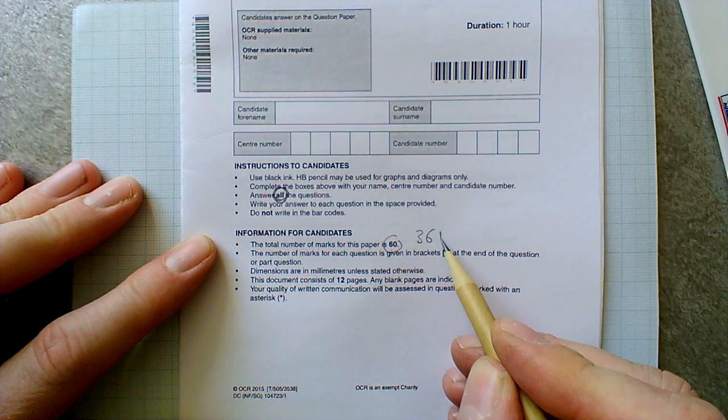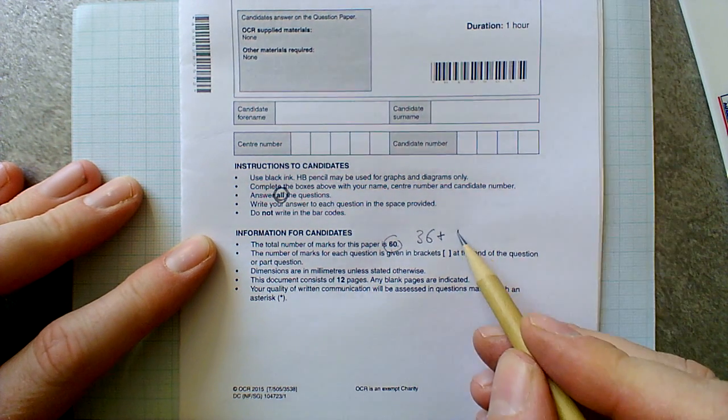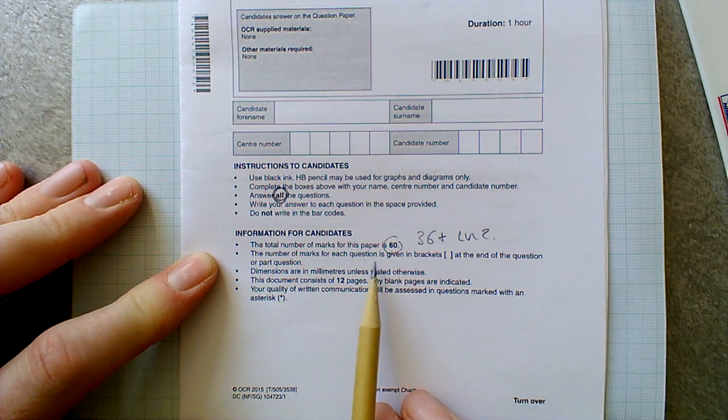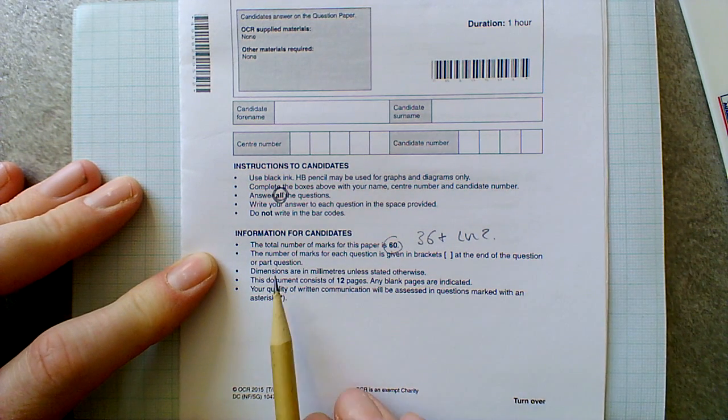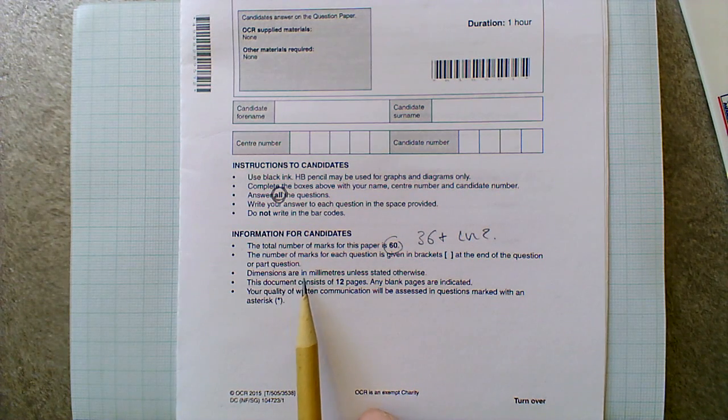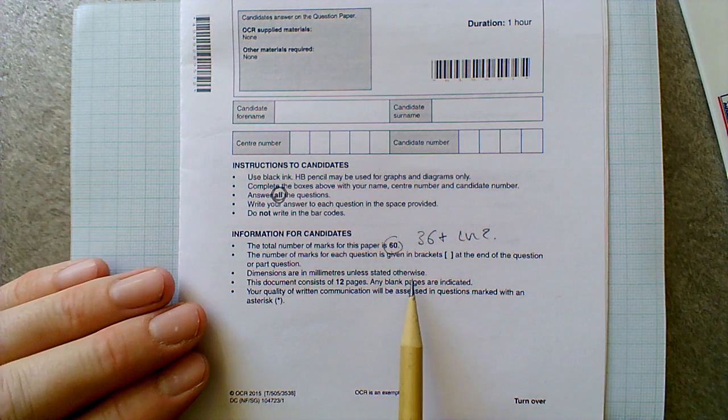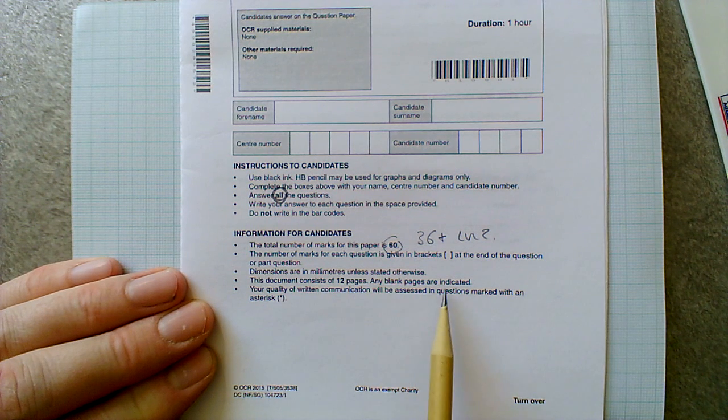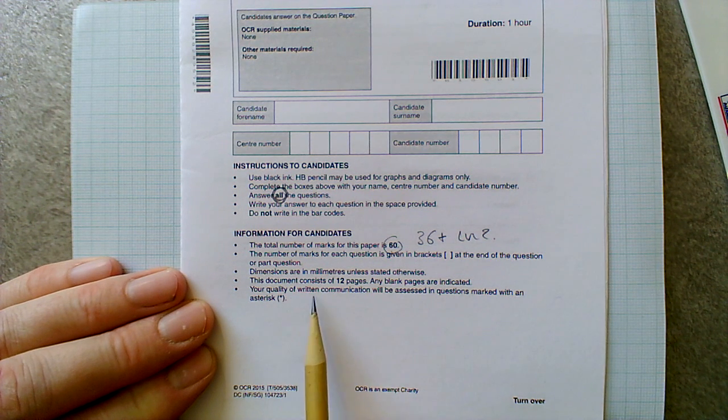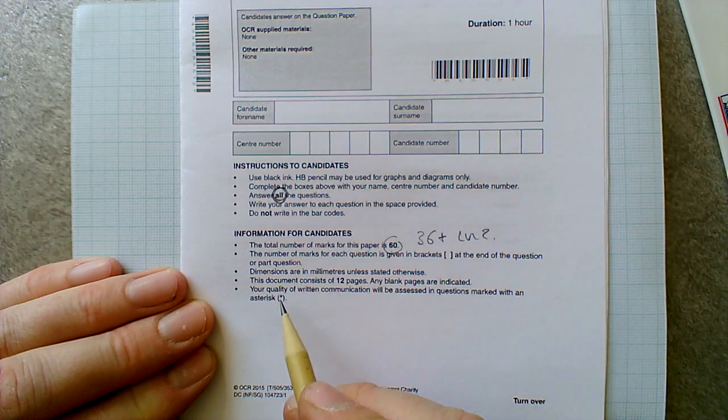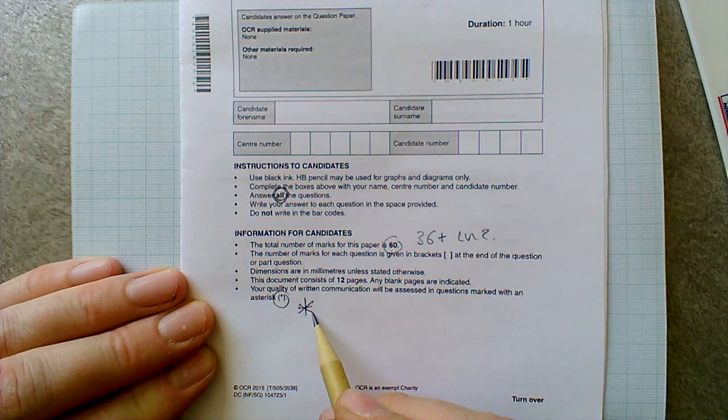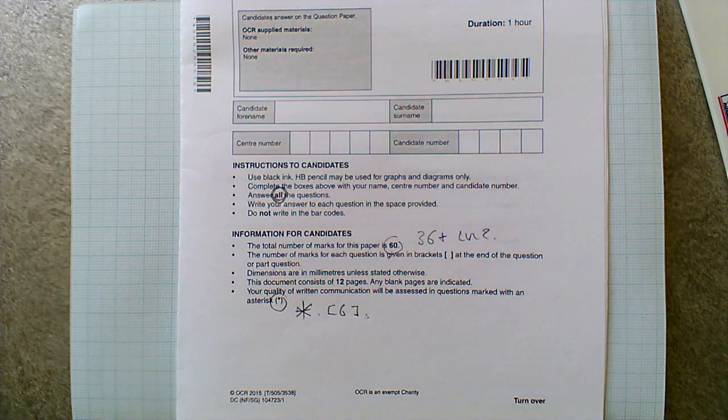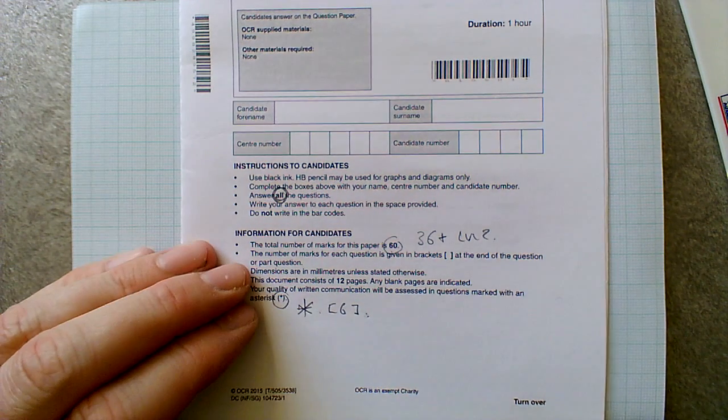Remember, I was talking about the fact that you need at least 36 plus to get the Level 2. So that's really important to keep that in mind. Number of marks for each question is given in square brackets at the end of the question or part of the question. Dimensions are in millimetres unless stated otherwise. This document consists of 12 pages. Any blank pages are indicated. Your quality of written communication will be assessed in questions marked with a star. So you've got to watch out for that asterisk. That will be a six mark question, which is really important.